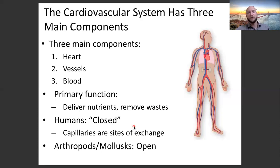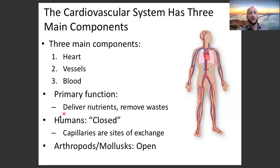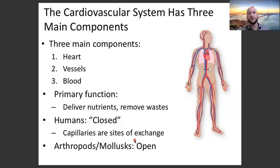Capillaries, the smallest of the vessels, are where nutrients are able to leave the circulatory system and waste products are able to come in. Blood is supposed to stay within the vessels and the heart. Humans are a closed system — what is outside, the interstitial fluid, is different than what's inside, our blood. Capillaries are the sites of exchange.